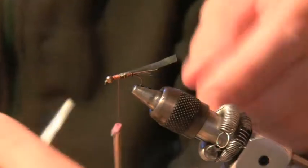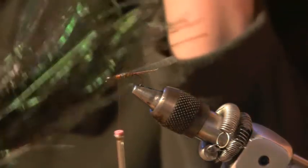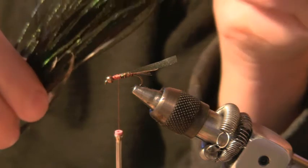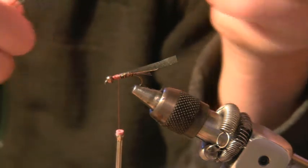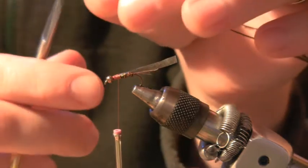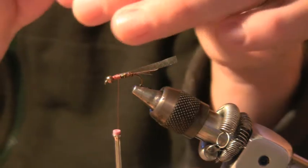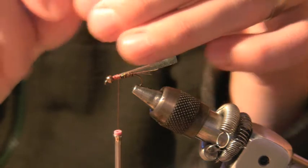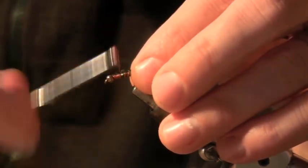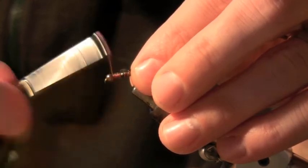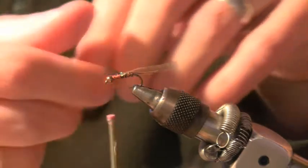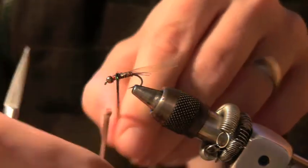And kind of hold it off and get you some peacock herl. I'll get about two or three pieces. And then right here where the white ends, I'm going to just snip up just a little bit above that. Just so it'll wrap good. Tie it in. And then start wrapping away.